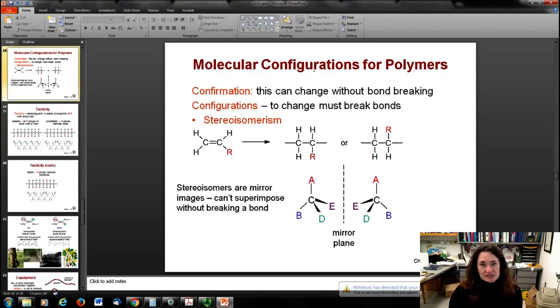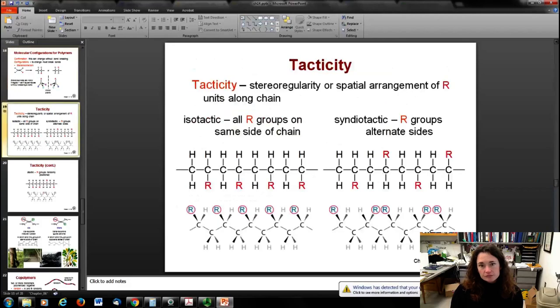Now, configuration is different from conformation. They often get confused, but they are actually different. The conformation, as we discussed, can change without bond breaking. It can just rotate within the bond. However, the configuration, in order to change that, you do have to break the bond. So one example of that is a stereoisomer. So for example, this has the same chemical formula, but the side group is on a different side. It's kind of a mirror image of itself. So here we've got our side chain, this little R group on this side, and here it's on the top. So stereoisomers are mirror images, and you can't superimpose or change one to another without actually breaking the bond.